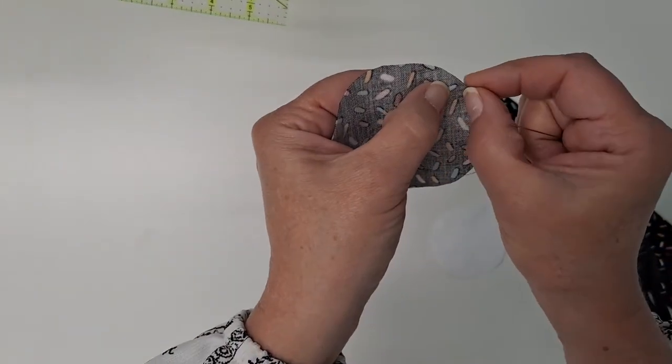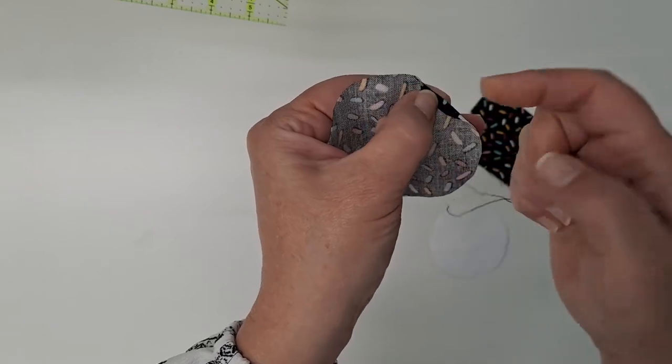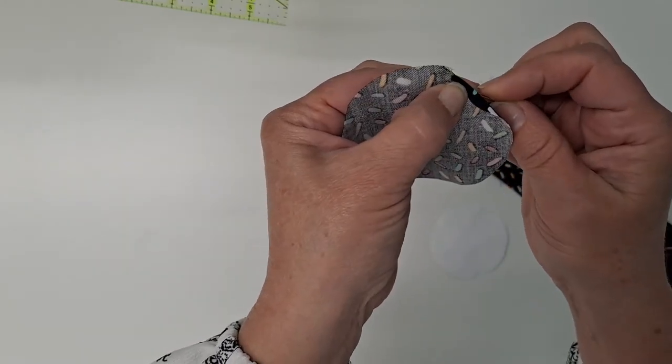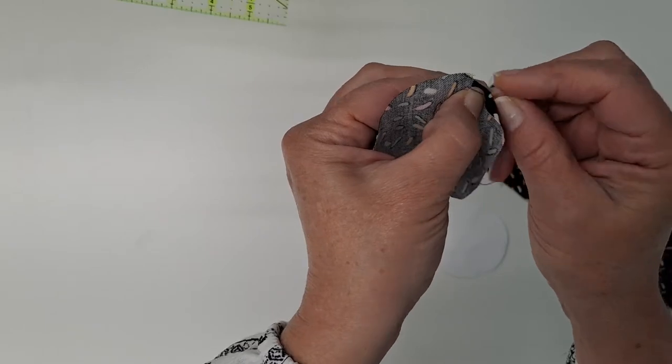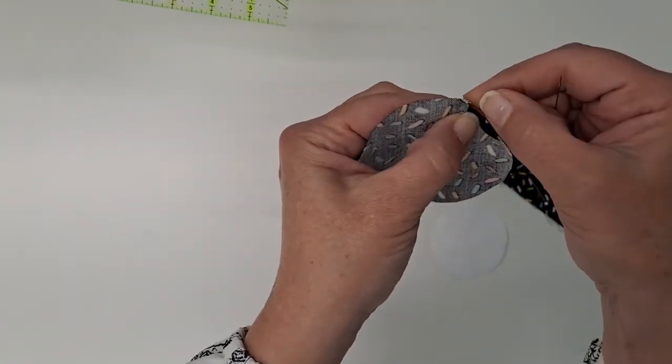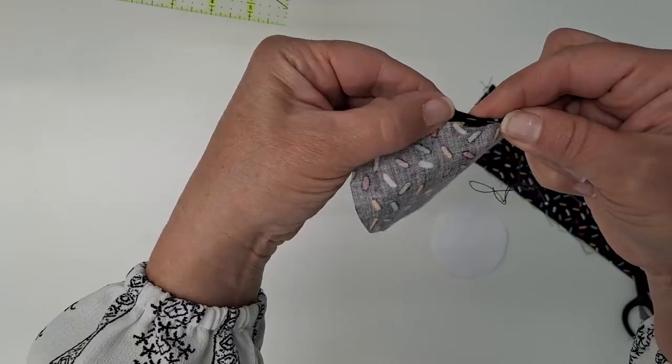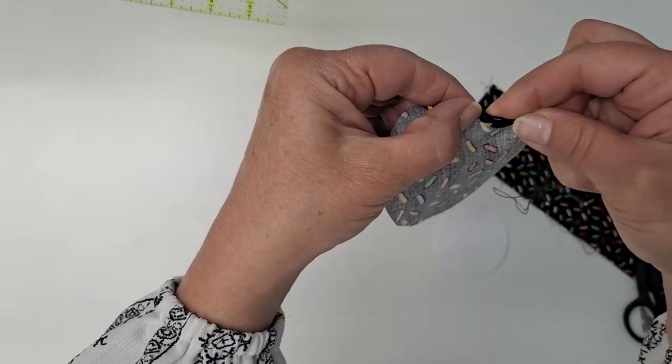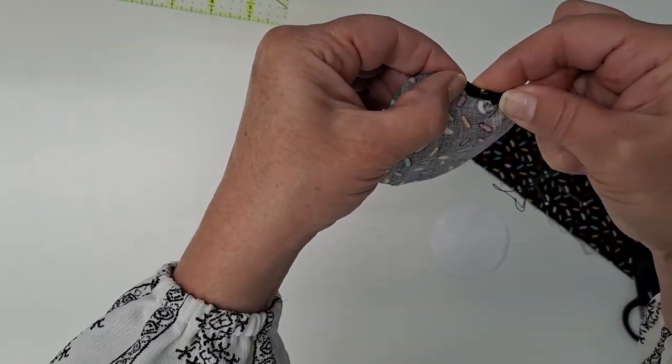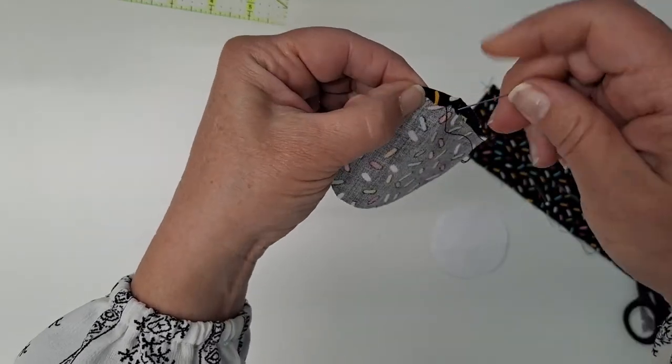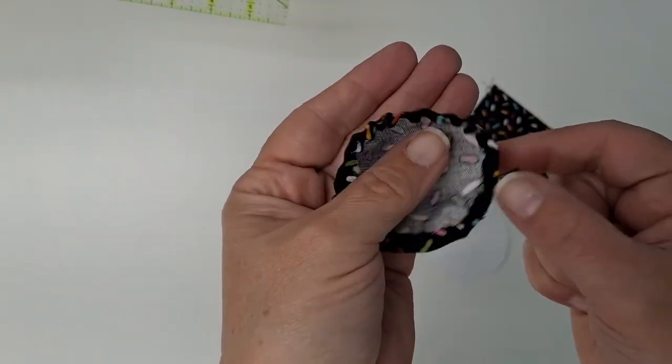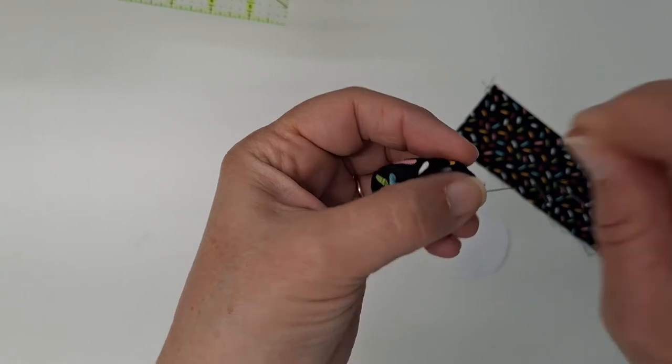And I'm just going to fold this a quarter inch onto itself and take a stitch up. And I'm going to continue around my circle, turning that a quarter inch, and doing a running stitch all the way around the circle. So it's going to look like this, and we're just going to pull that running stitch tight.